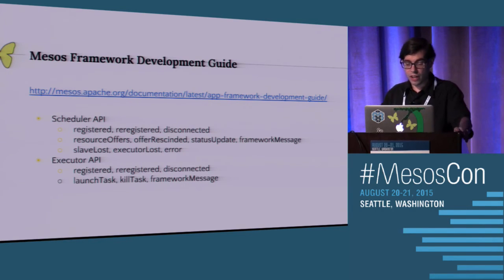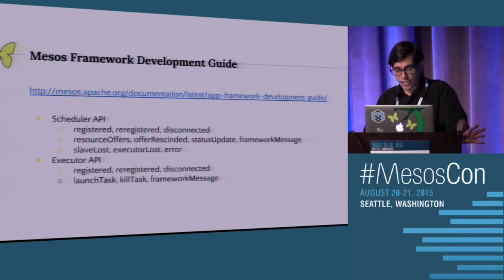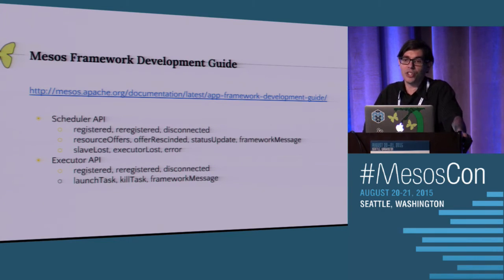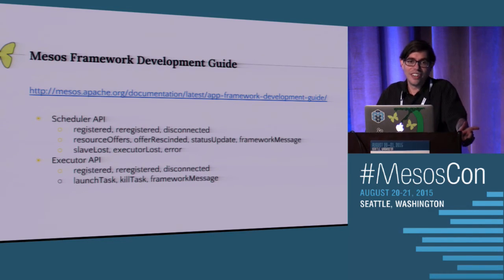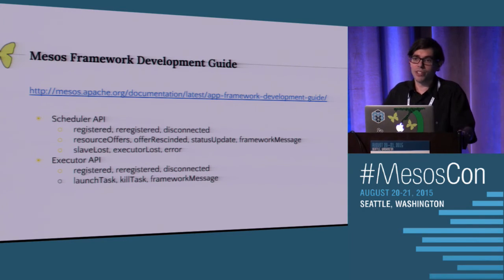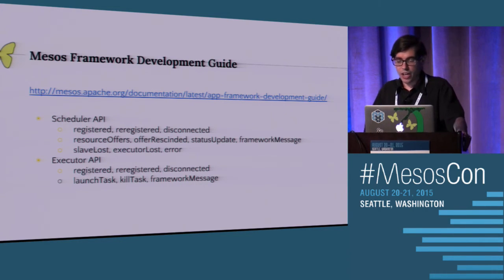On the executor side there are callbacks for register, re-register, disconnected, and launch task. When the task is launching, this is the function that gets called. When you want to implement and actually run your application - say a Java application - you implement the launch task callback, and once the task launches you can do whatever you want. Same thing with kill task - if your task is getting killed, you get the message. And framework message works in the other direction as well.